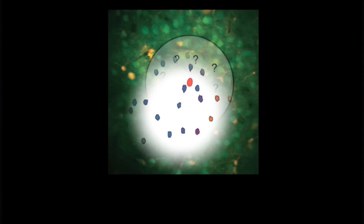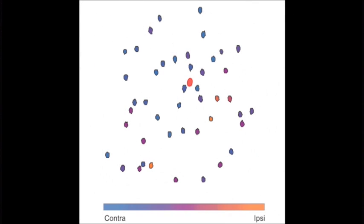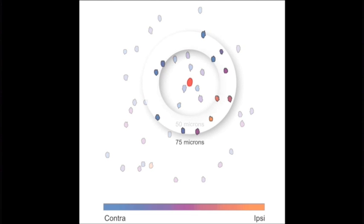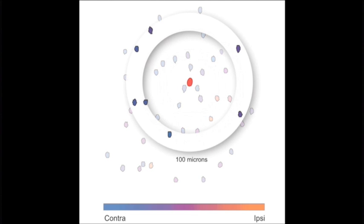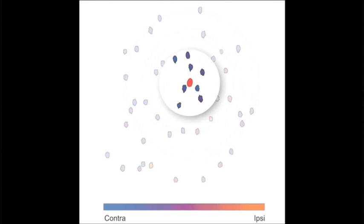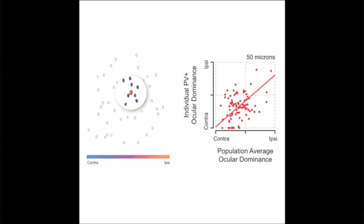We next explored the relationship between individual PV cells and their neighbors. Here is an individual PV cell and surrounding population, with each neuron color-coded for ocular preference. We then examined local populations at increasing distances from PV cells. We found a strong correlation between population average and individual PV cell ocular dominance for the closest neighbors.